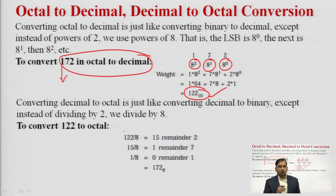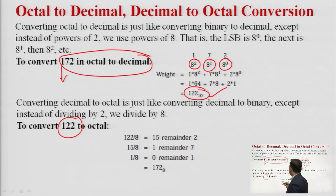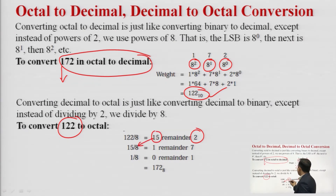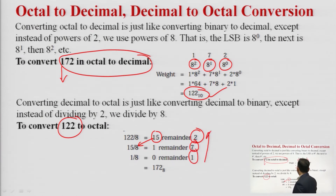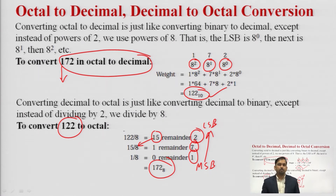To convert decimal back to octal — for example, 122 — we divide by 8: 122 ÷ 8 = 15 remainder 2 (LSB), then 15 ÷ 8 = 1 remainder 7, then 1 cannot be divided further. Reading remainders from MSB to LSB gives 172 at base 8. This is the division approach for converting decimal to octal.